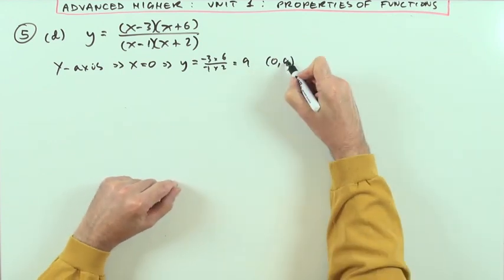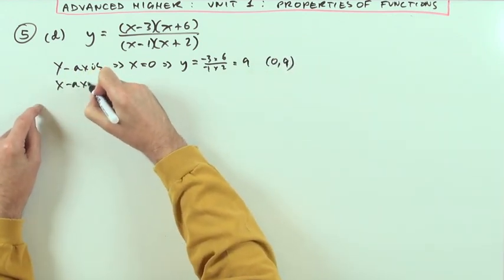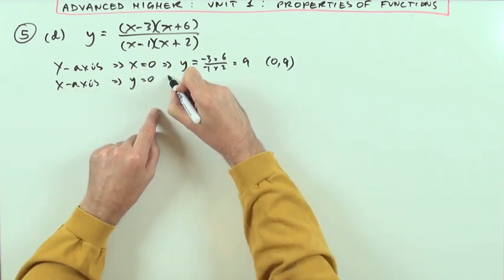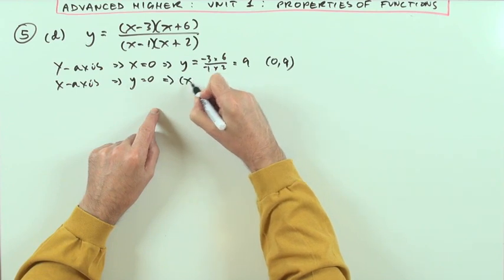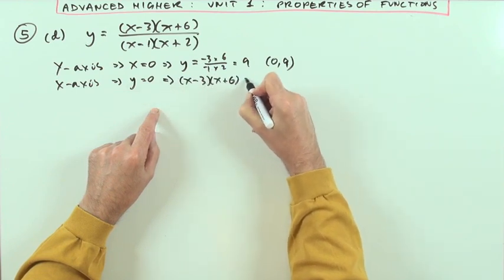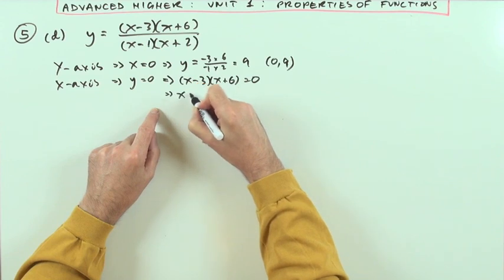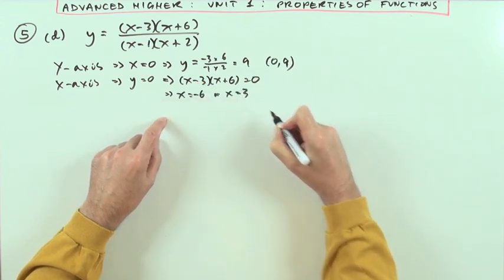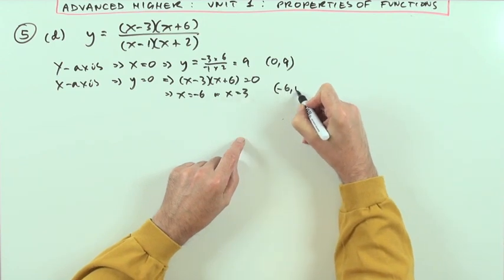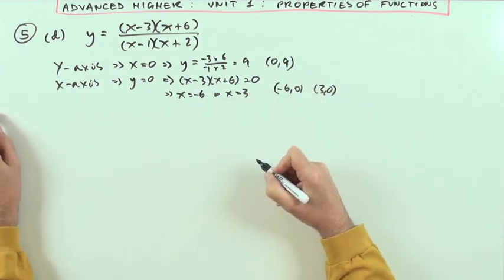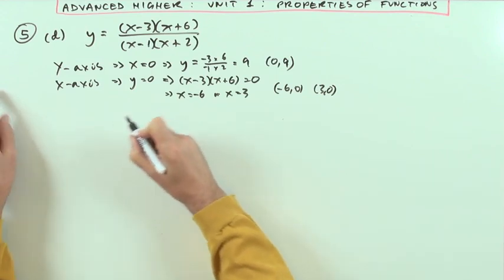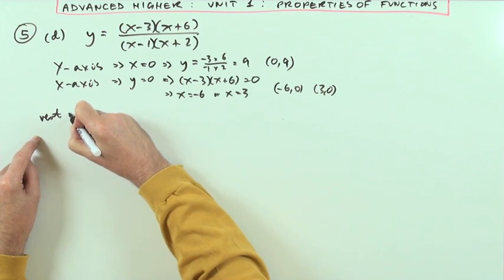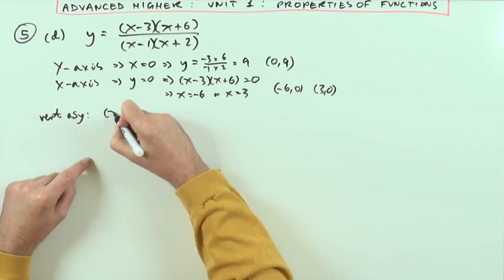For the x-axis, y equals zero, and that means the numerator equals zero. Putting them in order: either x equals negative six or x equals three. So I've got the points (−6, 0) and (3, 0).